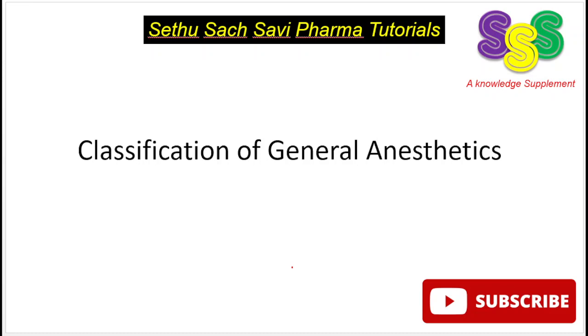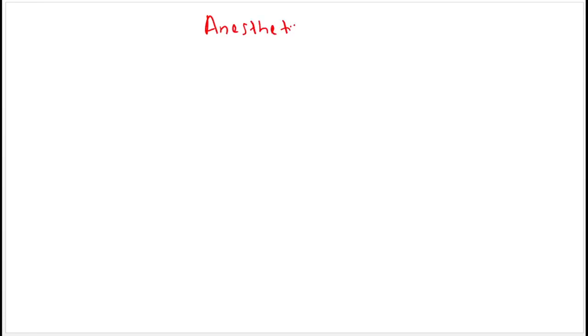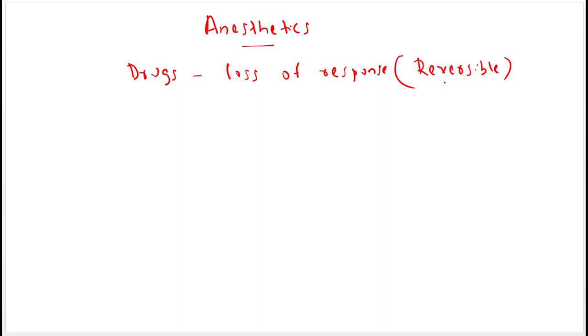Hello everyone. In today's video we are going to explain the classification of general anesthetics. Anesthetics are basically drugs which produce a reversible loss of response to a particular stimuli, and such drugs are called anesthetics.